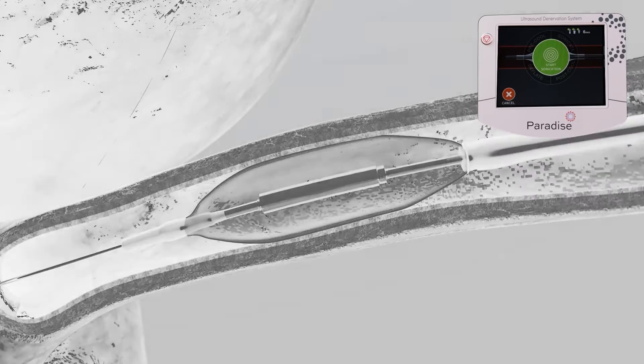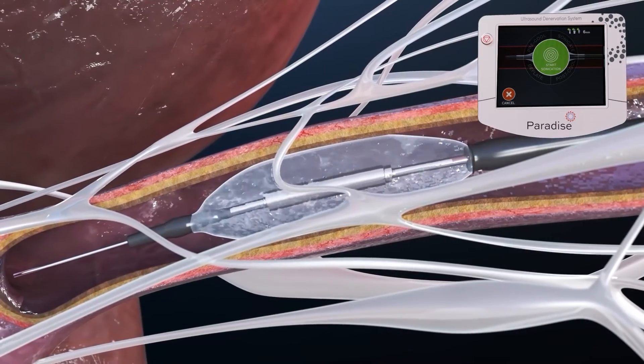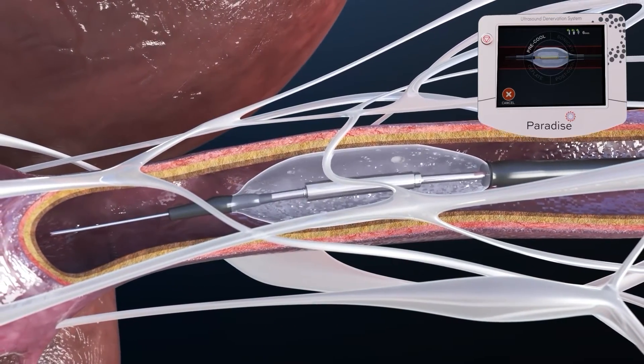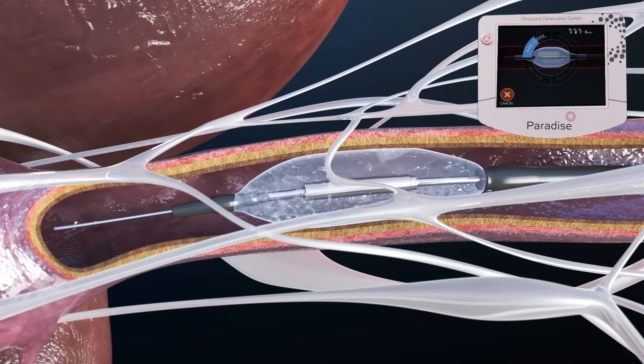Once apposition is confirmed, the catheter is ready to sonicate and deliver 360 degrees of ultrasound energy to a targeted depth of one to six millimeters, reaching 80% of the sympathetic nerves around the artery.